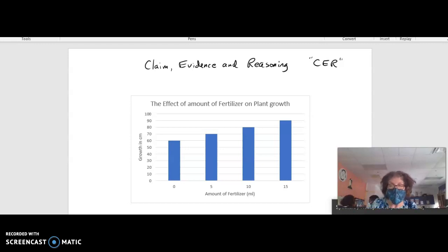Hi, this is Mrs. Murdoch, and today I'm going to explain something called claim, evidence, and reasoning. Claim, evidence, and reasoning are steps that you take after you have finished a graph to explain what the graph means.